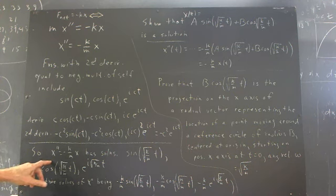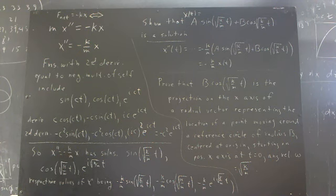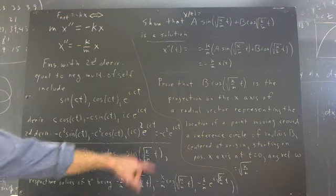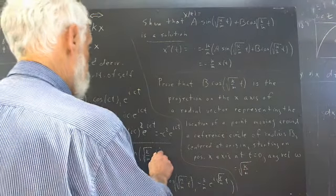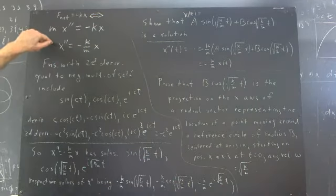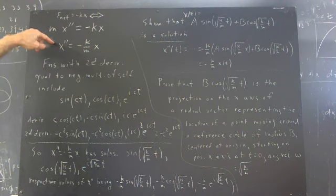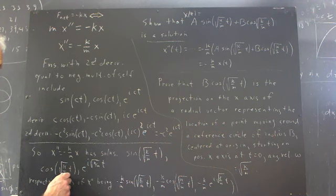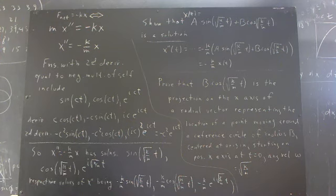it follows that x double prime equals negative k over mx has solutions of this form. And I've asked you to verify that sine of square root of k over m times t is a solution to the equation. So, plug that into the equation and see what you get. But, in class, people had no problem doing that. And also, the cosine of the square root of k over m times t is a solution. And e to the i square root of k over m times t. You should verify that each of these is a solution.